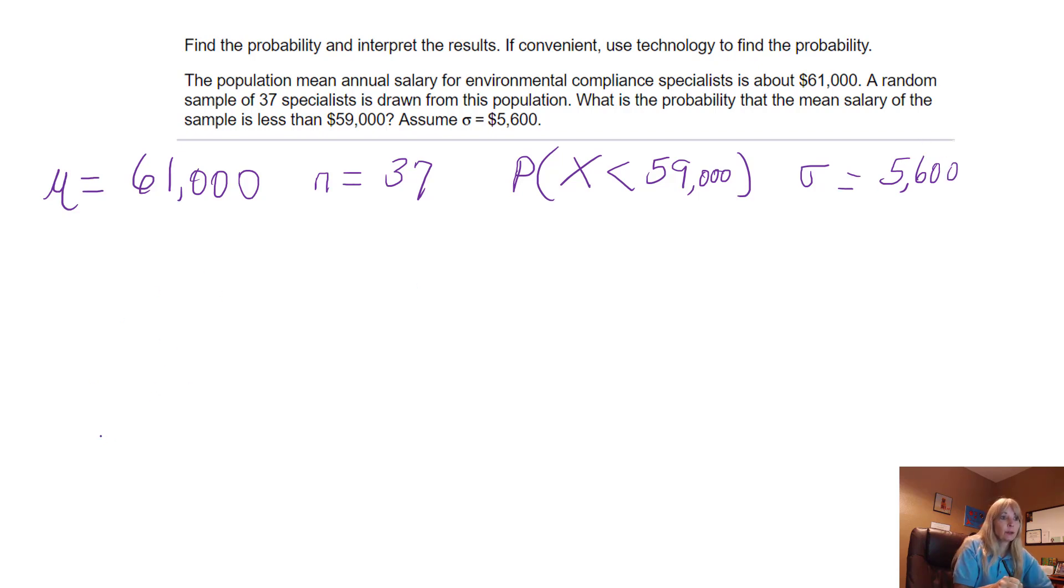Draw a picture, draw a picture. Let's see what this looks like. So draw your normal curve. Pretty good, huh? And then right down the middle is what they're telling me the mean is. And I basically want to know what is the probability, the area that I would get something less than—that's why I'm shading the $59,000.